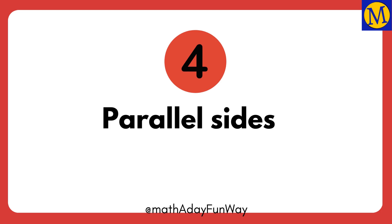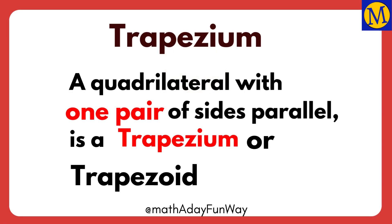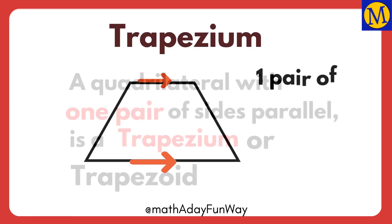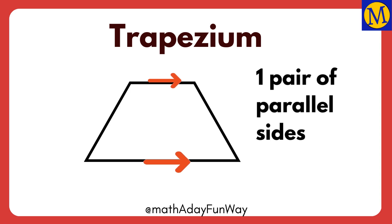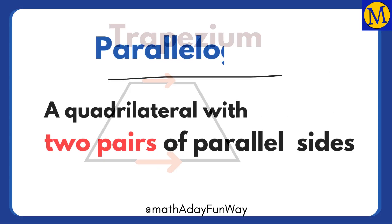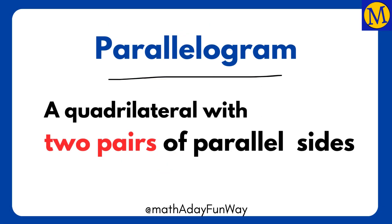The fourth quality that gives a quadrilateral a special name is parallel sides. A quadrilateral with one pair of sides parallel is called a trapezium or a trapezoid. A quadrilateral with two pairs of parallel sides is called a parallelogram.